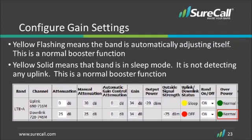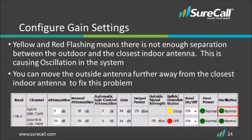The yellow solid light means that band is in sleep mode — it is not detecting any uplink and has turned off until it detects an uplink signal. This is a normal booster function as well. Yellow and red flashing means there is not enough separation between the outdoor and the closest indoor antenna, causing a feedback loop called oscillation in the system. This should be fixed before leaving the facility where the booster is installed, and this alert will cause an email to be sent to the registered user.